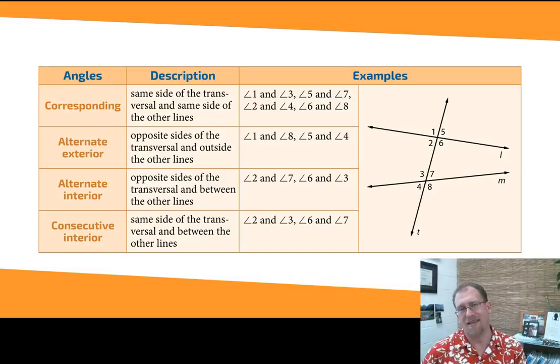Similarly, there are alternate interior angles, which are also on the opposite sides of the transversal. But instead of being on the outside of the lines, they're on the inside of the lines. So two, seven, or three and six. Those are alternate interior angles.